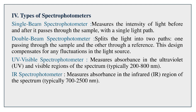This double-beam design compensates for any fluctuations in the light source. UV-visible spectrophotometer measures absorbance in the ultraviolet (UV) and visible regions of the spectrum, typically 200 to 800 nanometers. IR spectrophotometer measures absorbance in the infrared (IR) region, typically 700 to 2,500 nanometers.